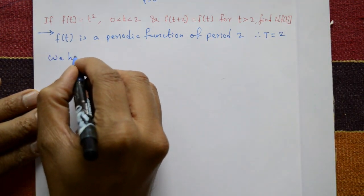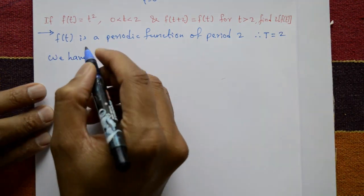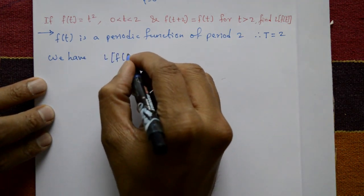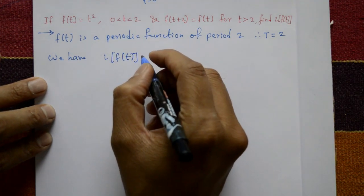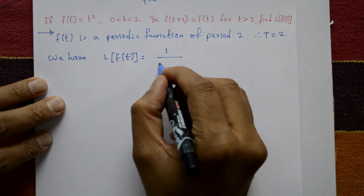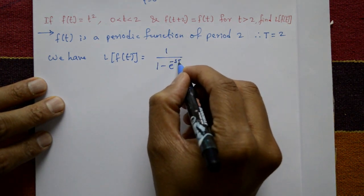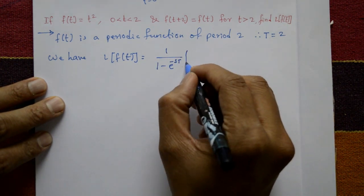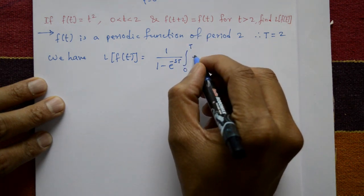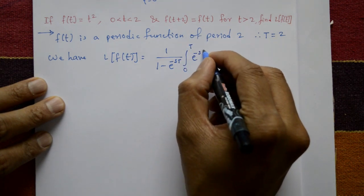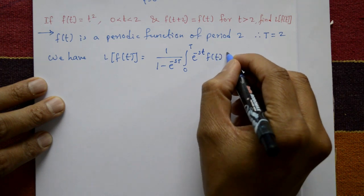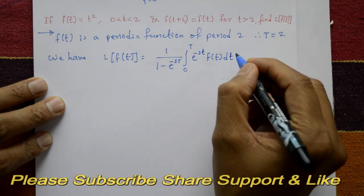We have the theorem: the formula for the Laplace transform of a periodic function is L{f(t)} equals 1 upon 1 minus e raised to minus sT, times the integration from 0 to T of e to the power minus st into f of t, dt.